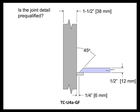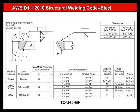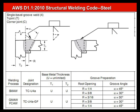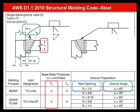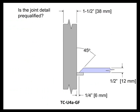The first question is: is the joint detail pre-qualified? To answer that, we go to the code or to the steel manual and identify the critical variables that constitute pre-qualification. The root opening in our joint was a quarter inch — that's pre-qualified. The included angle was 45 degrees — pre-qualified. T1 can be unlimited in thickness, so that's pre-qualified, and T2 also can be unlimited. Putting it all together, the answer is yes, the joint detail is pre-qualified.